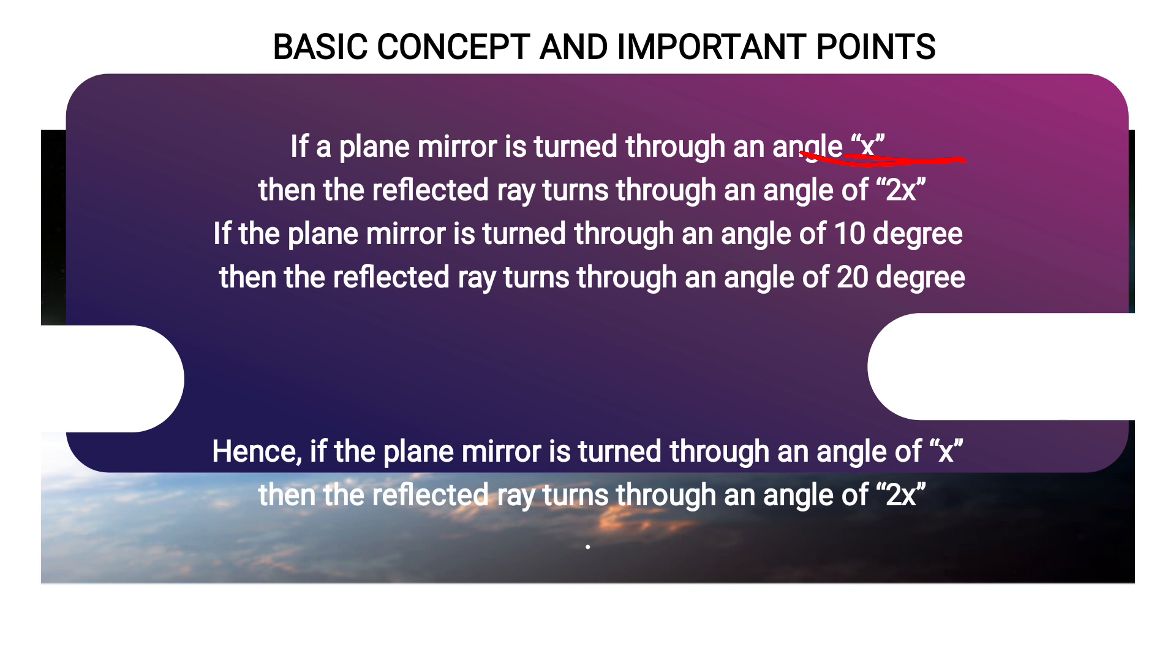then the reflected ray turns through the angle of 2x degrees. That means if a mirror is turned by 10 degrees, then the reflected ray turns through an angle of 20 degrees, and this is the same principle applicable for the question that has been asked.